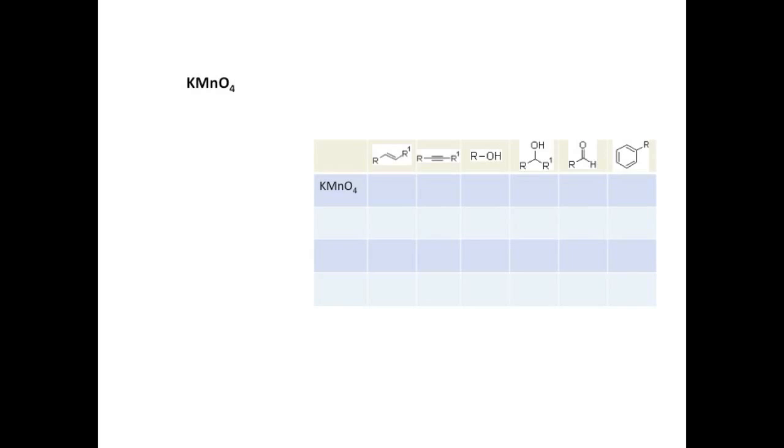I'll go through each of these groups on the chart to the right as there are a few exceptions. Starting with alkenes, we do start with an exception. Under cold dilute conditions, reacting an alkene with potassium permanganate will produce a vicinal diol. Vicinal meaning the hydroxyl groups are next to each other on adjacent carbons.